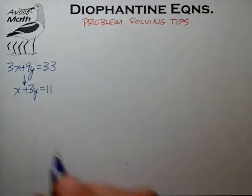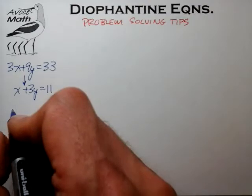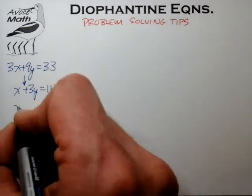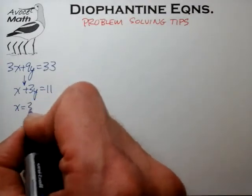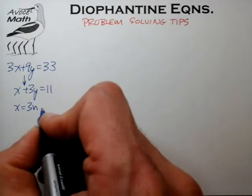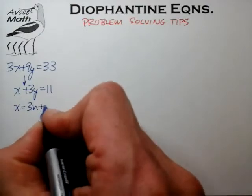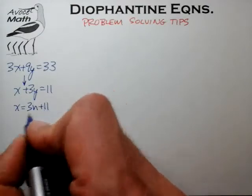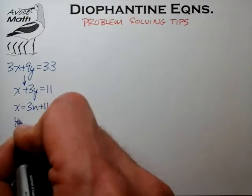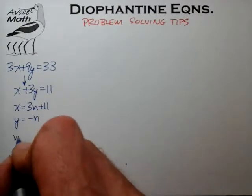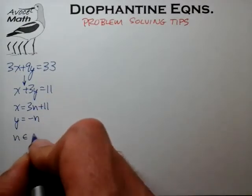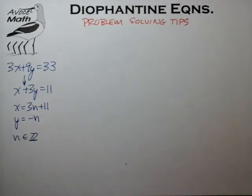We can apply the methods described in the previous videos to come up with a solution set of x equal to three times some integer n plus 11, and y equal to minus that same integer n, for n an element of all integers.